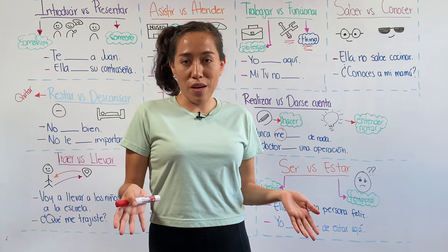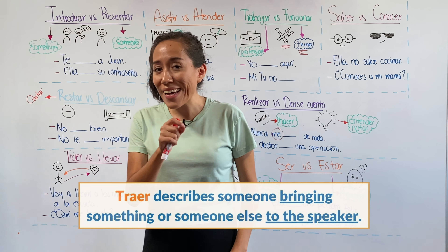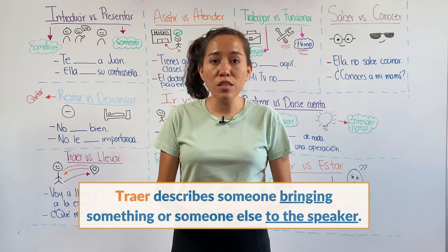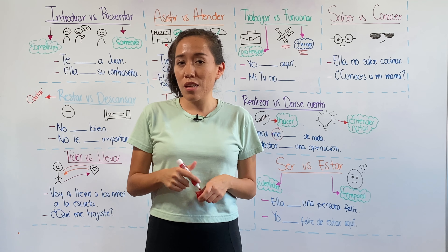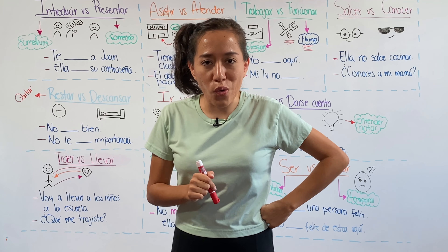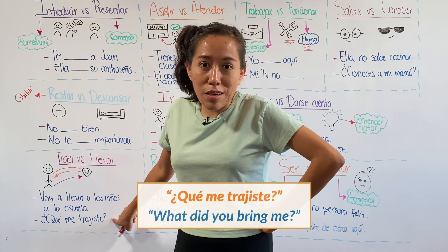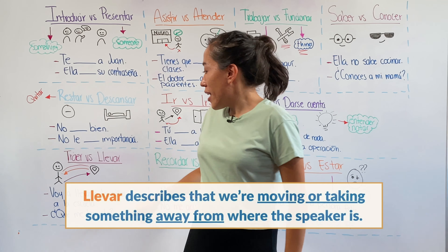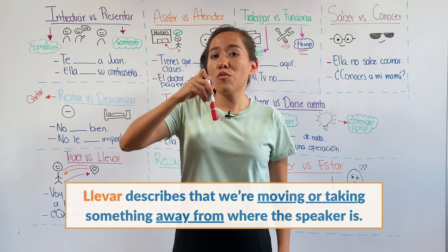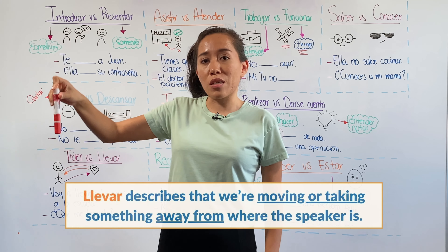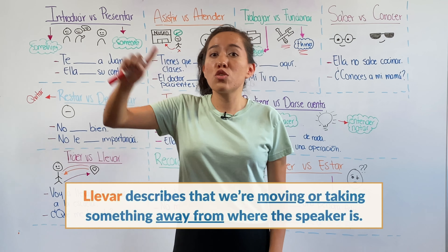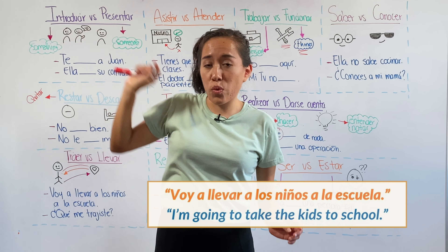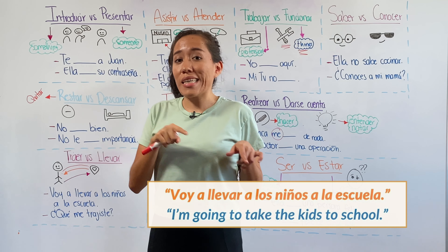Traer versus llevar. In Spanish, we use traer to express that we're bringing something to the place where the speaker is — for example, ¿qué me trajiste?, what did you bring me? Llevar, on the other hand, expresses that we're moving something from the place where the speaker is, taking something somewhere else — for example, voy a llevar a los niños a la escuela, I'm going to take the kids to school.